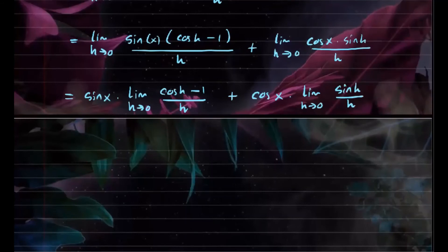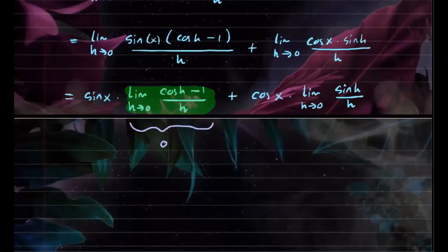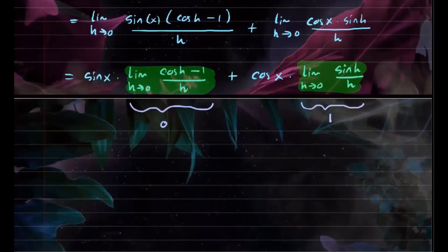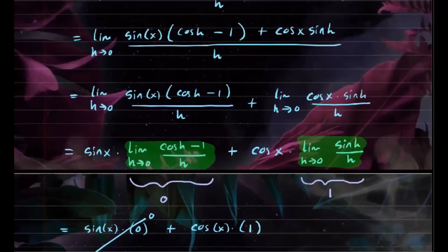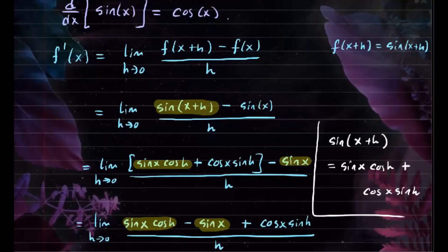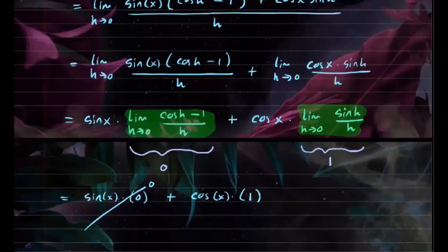Now, here's something to remember. The limit of cosine h minus 1 over h as h approaches 0 is a well-known limit equal to 0. And the limit of sine h over h as h approaches 0 is another well-known limit equal to 1. So we have sine x times 0 plus cosine x times 1, which gives us cosine of x. Therefore, the derivative of sine x is cosine x, as we have proven using the limit definition.